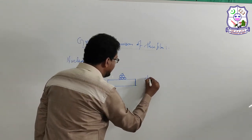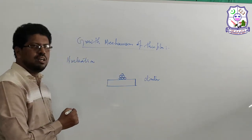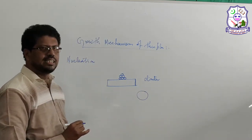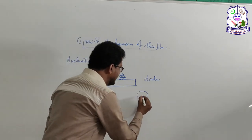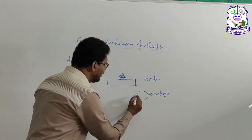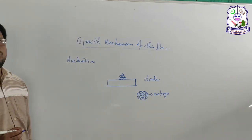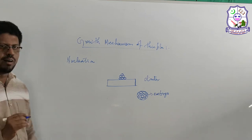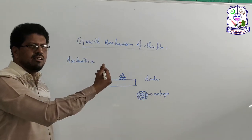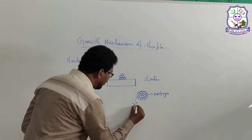One atom is there, another atom will come — it will form a dimer, then a trimer, then a polymer, like that it will go on, and finally it will form a group of atoms whose size reaches a critical size. After this critical size, these atoms start attracting more atoms. This critical size is called an embryo. An embryo is a critical-size cluster of atoms that acts as a growing point on the surface of the substrate, attracting vapor atoms from the source.